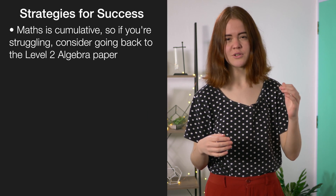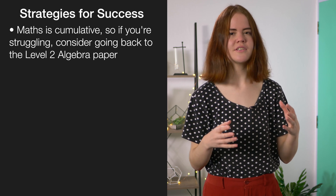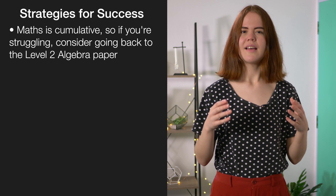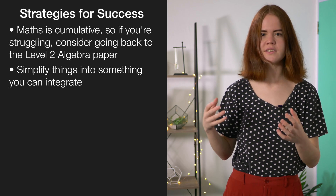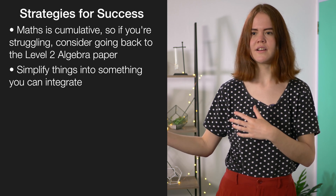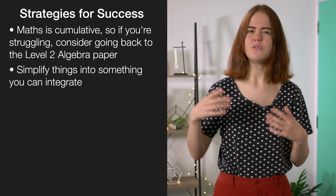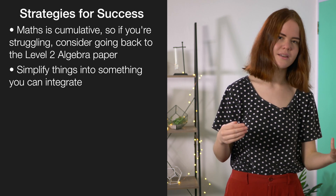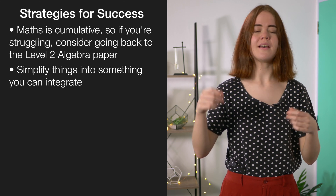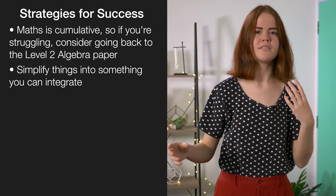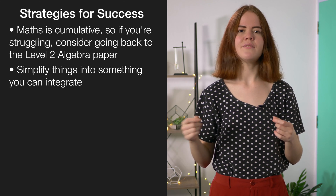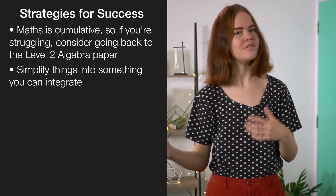Another important thing to remember is that maths is cumulative, so if you're struggling with something like negative exponents, fractional exponents, or rational expressions, a good idea is to go back to the Level 2 algebra paper — all those skills were included for a reason. Another technique is to simplify or change whatever you're given if it looks complicated into something that you know you can integrate. So if it's a fraction, try to simplify it. If it's a polynomial to the power of something, you can't directly integrate that, so you need to substitute. If it's a fraction where it's one polynomial divided by another polynomial, you should be looking to use substitution again. And if it's a function inside another function, you should use reverse chain rule.